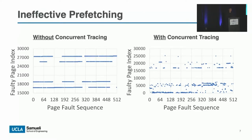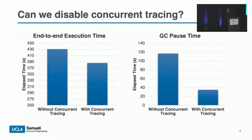Since the problems are caused by concurrent tracing in GC, a natural question is: can we just disable the concurrent tracing? The answer is no. Concurrent tracing is needed to get the liveness information of the whole heap. For G1GC, without concurrent tracing, it cannot reclaim as many dead objects and has to resort to a full heap GC, which scans and compacts the whole heap space in a stop-the-world period. We show that the average total execution time and GC pause time actually increased after disabling concurrent tracing because stop-the-world full heap GC is way too slow on far memory systems. For other modern concurrent GCs like Shenandoah and ZGC, they rely on concurrent tracing to reclaim memory, so disabling it would destroy their functionality.